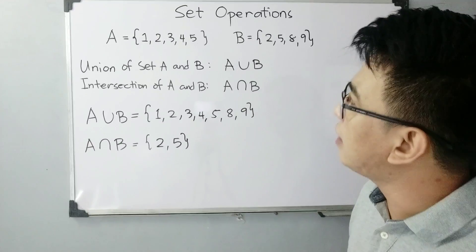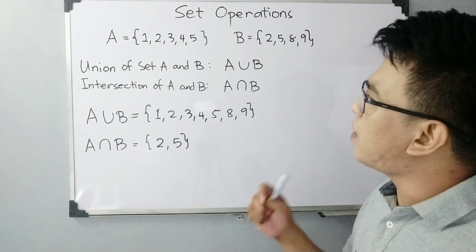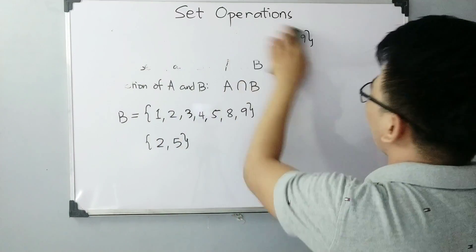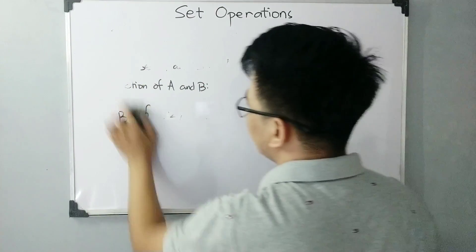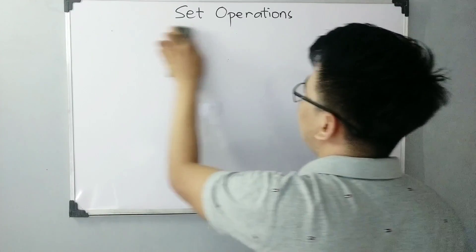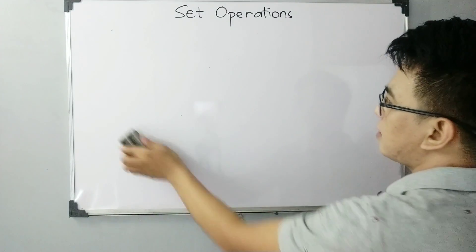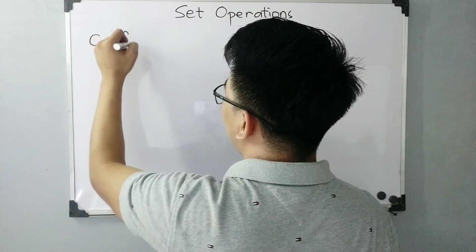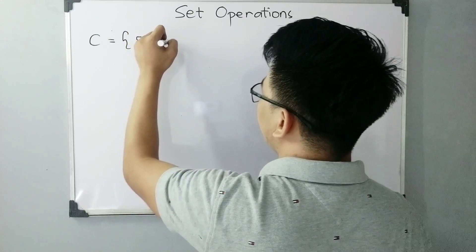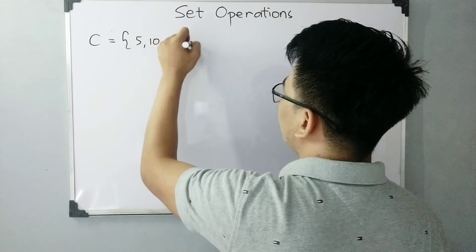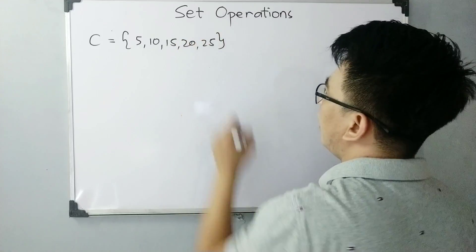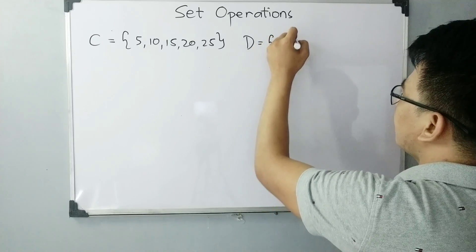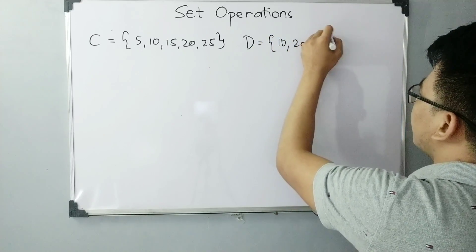Let's have another example so you can understand even better about union and intersection. Let's say we have set C and the elements are 5, 10, 15, 20, and 25. And for set D, the elements are 10, 20, and 30.